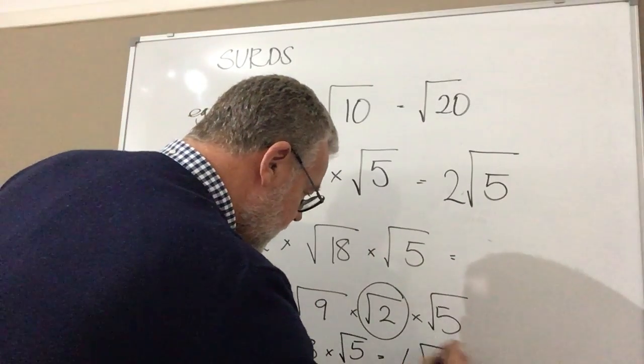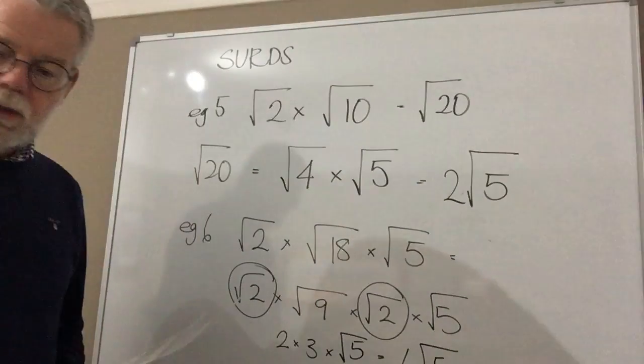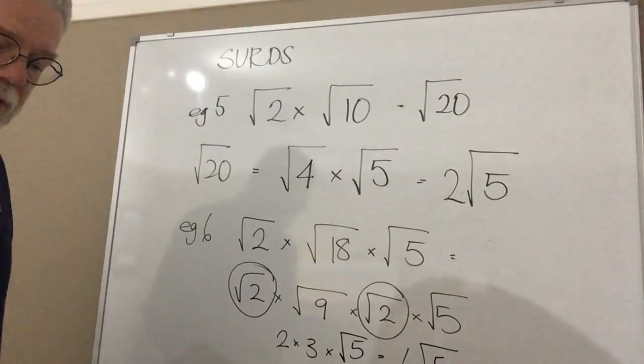So to simplify this answer, I multiply those two together, keep it on the outside which gives me the answer of 6 root 5. We'll stop it there.